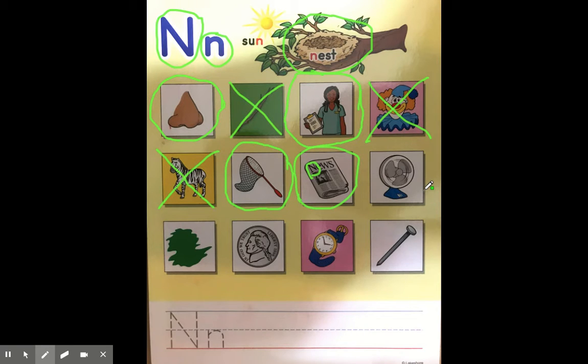Now we have the fan. Fan, fan, news, nest, nurse, nose, no, that doesn't go. Cross off the fan. Look, we have the color that I'm using to make my circles and X's. Green. Does green start with the N for nose and net? Green. No. We have to cross that off.